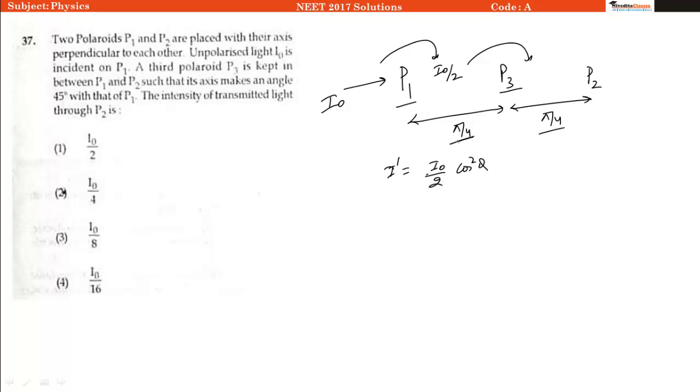So our angle is 45, so it will be I naught divided by 2 times 1 by root 2 squared, which will be equal to I naught divided by 4.